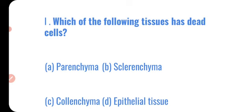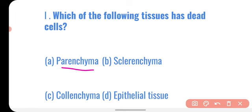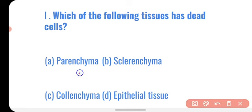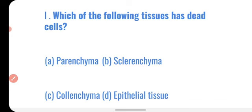The first question is: which of the following tissues has dead cells? The options are parenchyma, sclerenchyma, colenchyma, and epithelial tissue. Parenchyma, sclerenchyma, and colenchyma are plant tissues, and epithelial tissue is an animal tissue. The sclerenchyma tissue of the plant body has dead cells and they are found in the bark of trees. So the correct option is sclerenchyma.